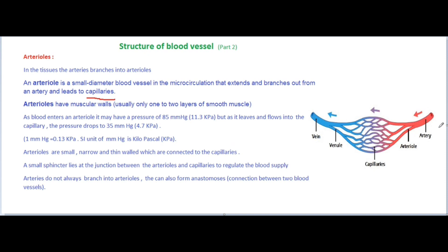Here you can see arteries, arterioles, capillaries, veins, venules, etc. in this image. Arterioles have muscular walls, usually only one to two layers of smooth muscles.